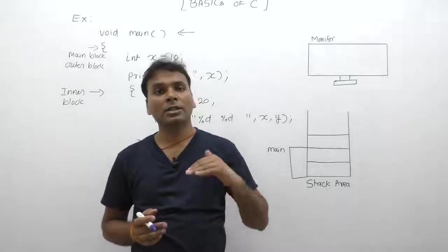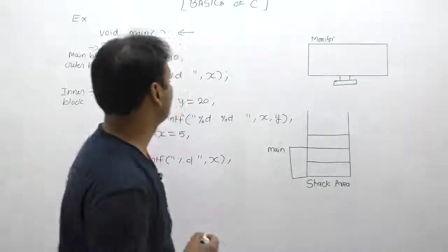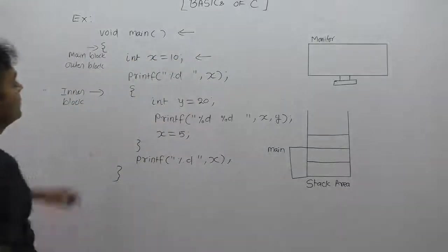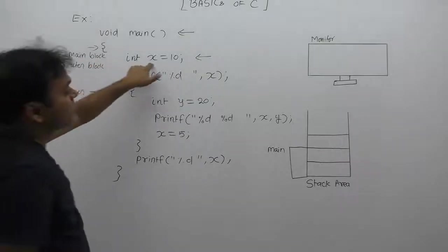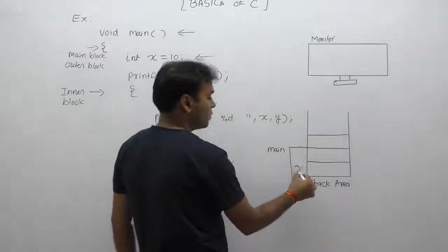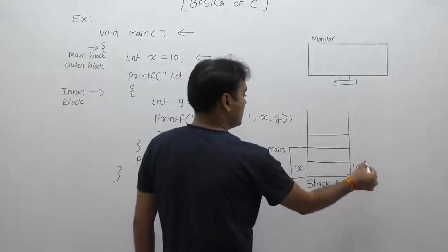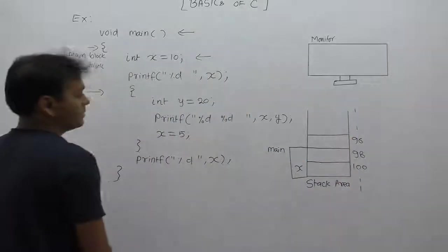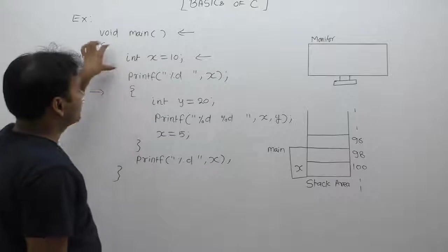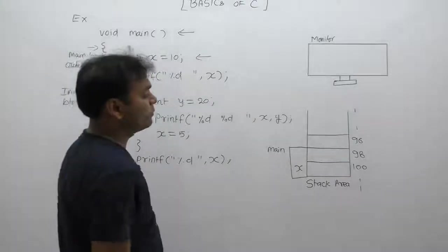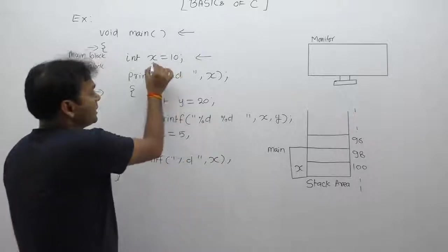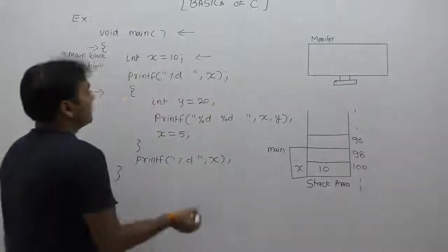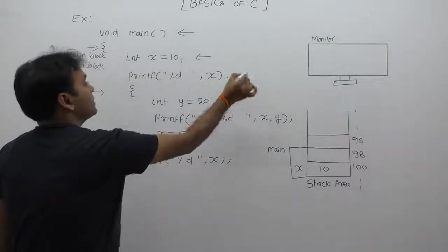First, control enters the outer block. The outer block has only one variable defined, which is x. Therefore, x is created at the top of the stack — we are assuming some memory address like 198, 96, and so on. Memory is allocated only for the local variable of the outer block. After executing the assignment statement, x is initialized to 10.